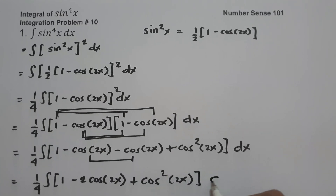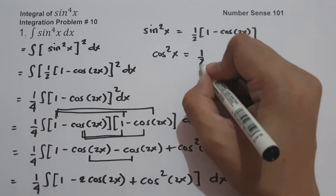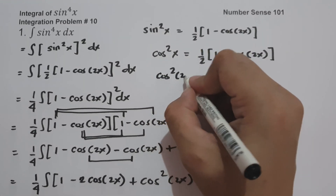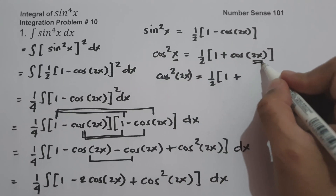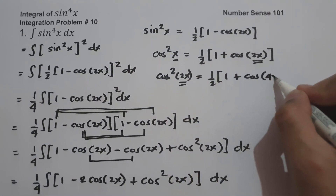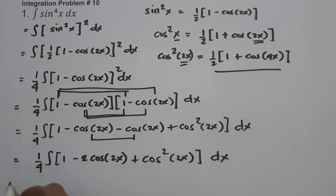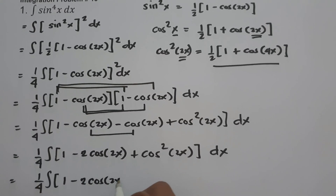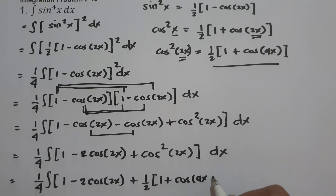Since we have cosine²(2x), we can reduce this using the power reduction formula. For cosine²(2x), we substitute 2x for x, so we get one half times the quantity (1 plus cosine 4x). So let us rewrite: one fourth times the antiderivative of 1 minus 2 cosine 2x plus one half times (1 plus cosine 4x) dx.